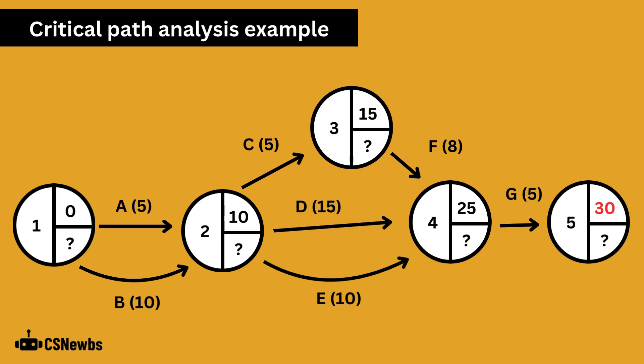The final node has an earliest start time of 30, once activity G's five days is added to node 4's 25 day earliest start time. So the whole project in this example should be wrapped up in a minimum of 30 days, as long as there's no delays and everything runs smoothly.